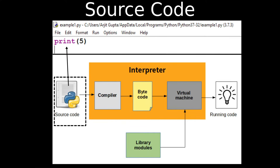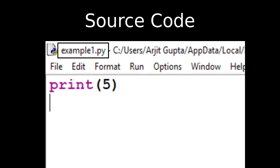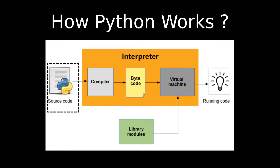First, let's see what source code is. Suppose I write a simple program to print the integer 5 — just one line: print(5). This is a simple Python program. The name of the file is 'example1' and the extension of a source code file is .py. Remember, the extension of the source code file is .py.